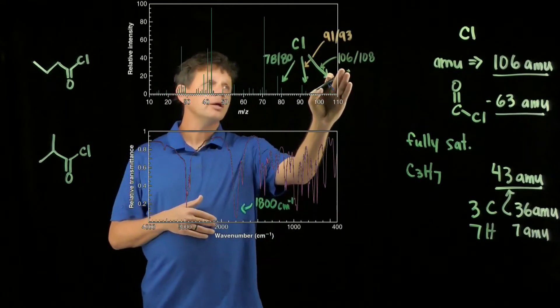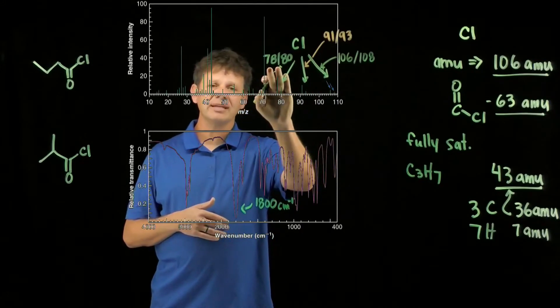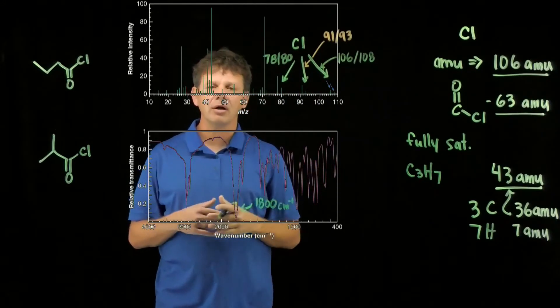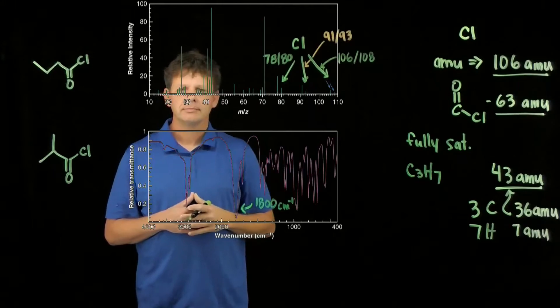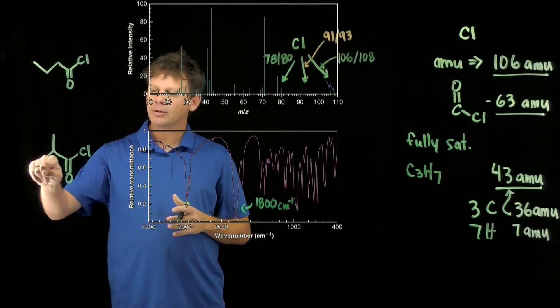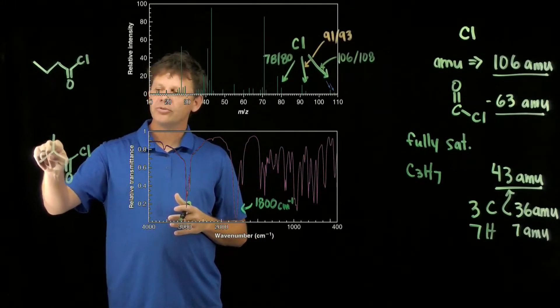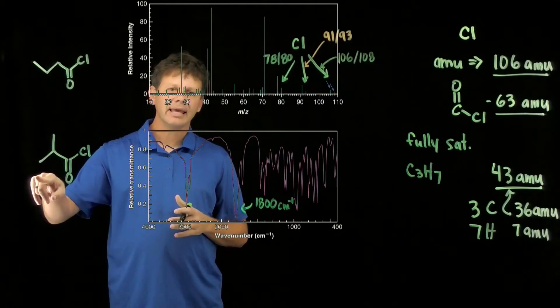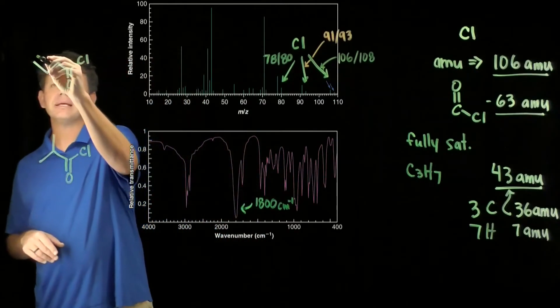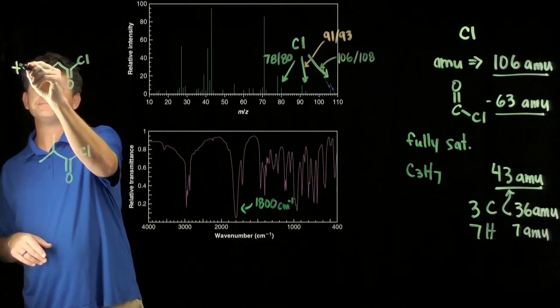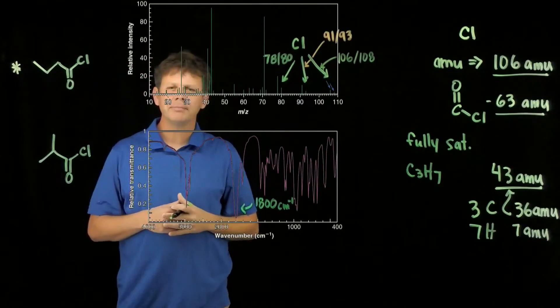The other one going from 106 to 78, though, that's the loss of an ethyl group. Can this molecule here lose an ethyl group? It can't, and so this must be the molecule.